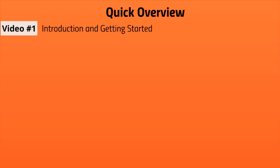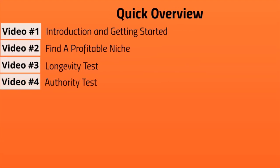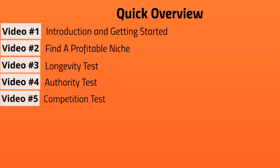I want to give you a quick overview of what's inside this video course so you know exactly what to expect and can see all the pieces of the puzzle. Video one is the introduction. Video two is finding a profitable niche with brainstorming. Video three covers the longevity test to make sure that niche can last for decades. Video four is the authority test — we'll ask questions to confirm you are indeed the authority. And video five is the competition test.